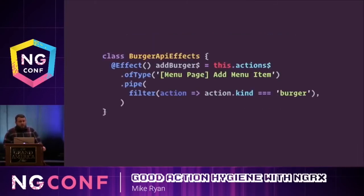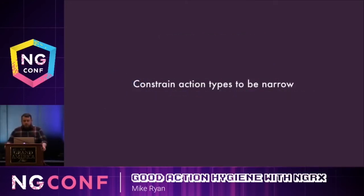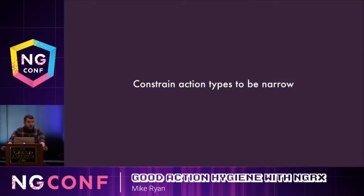Similarly, in an effect, you have to add additional filtering, and this is another kind of nested conditional. We're percolating these nested conditionals throughout the application. What we want to do is constrain action types to be narrow — avoid putting yourself in a situation where you have to specify the kind, subtype, or class of an action. Just leverage the action type to describe the event. This will cause you to write more actions, and I know NgRx has a boilerplate problem, but it's worth doing. You'll save yourself more time down the road by avoiding these nested conditionals.